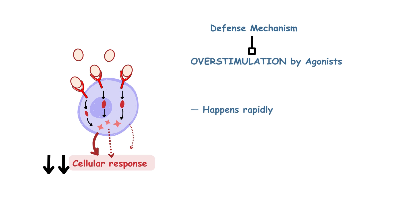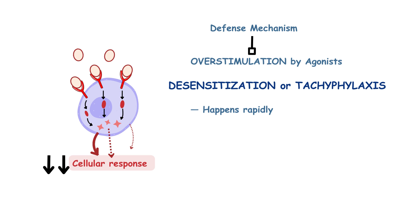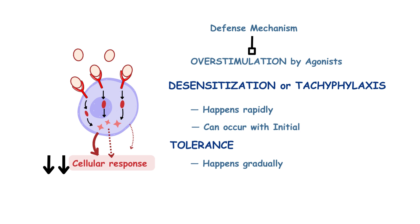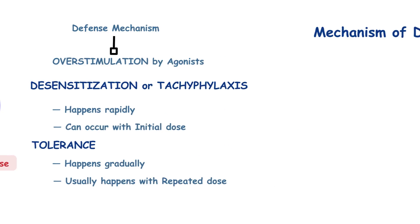This is actually a defense mechanism whereby cells prevent their overstimulation by agonists. If this happens very rapidly, like within a few minutes, it's called desensitization or tachyphylaxis. If it happens more gradually, over the course of days to weeks, it's called tolerance. Desensitization can occur with the initial dose of a medication, while tolerance typically happens with repeated doses.